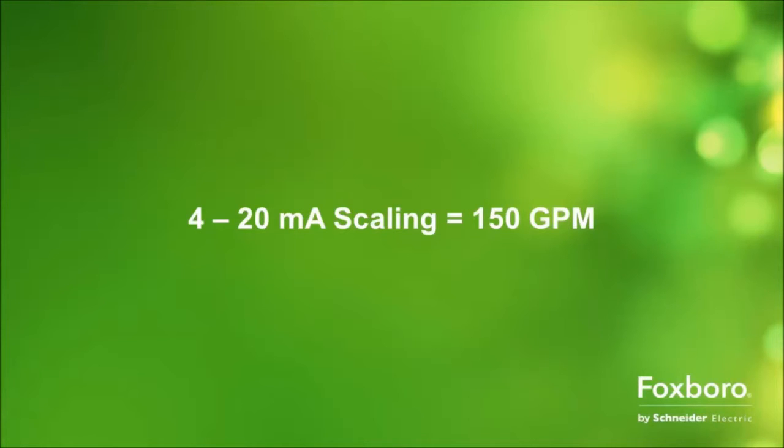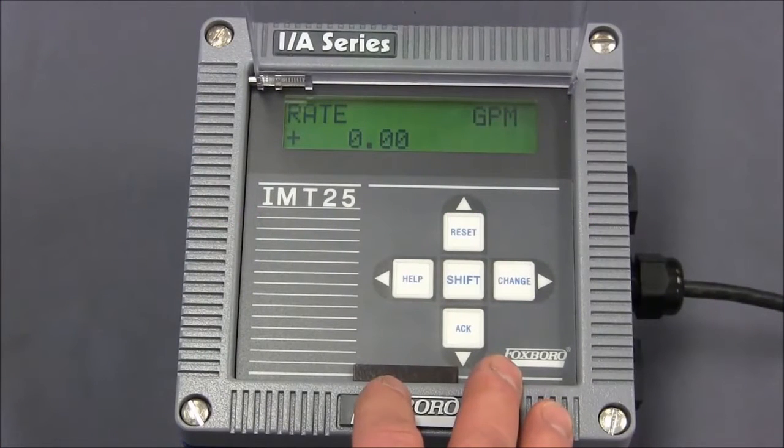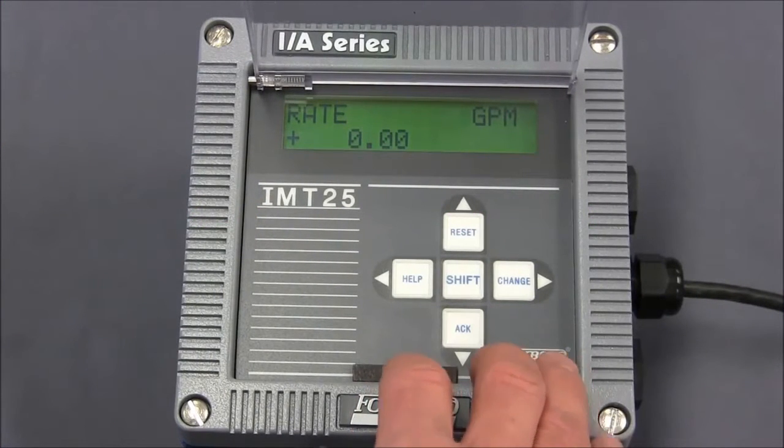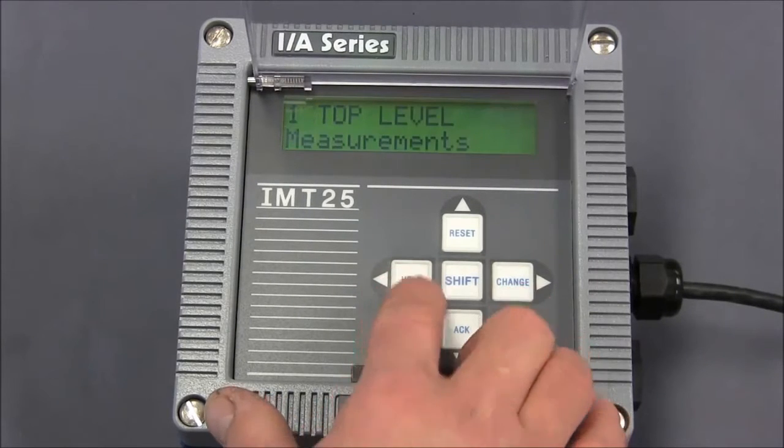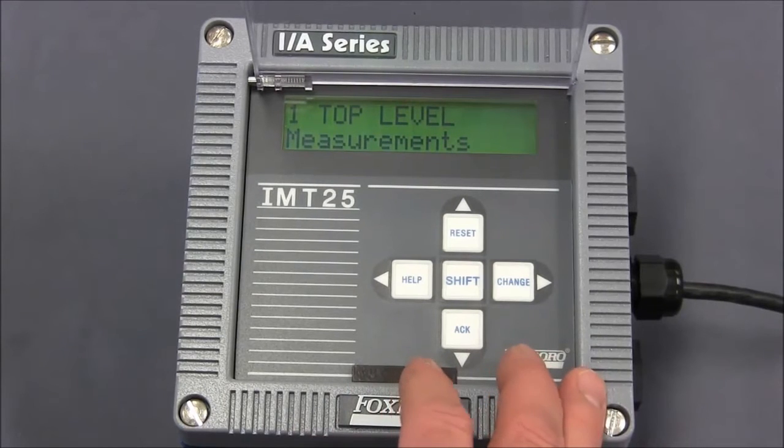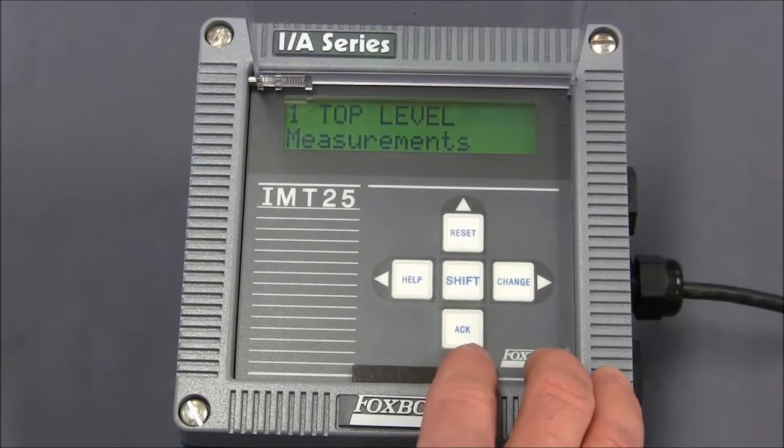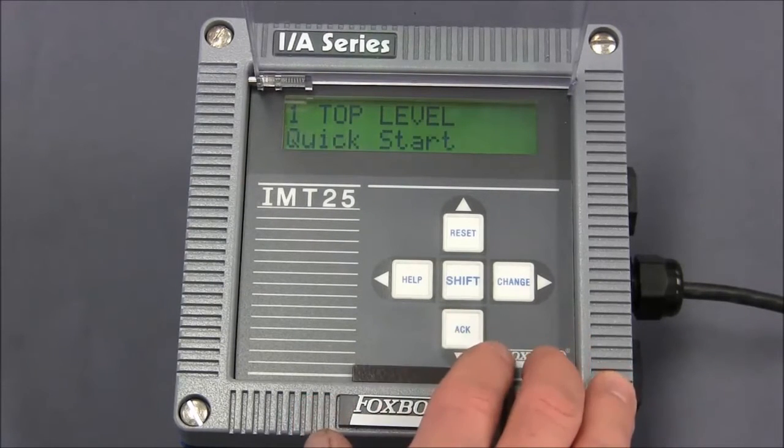Now let's configure the IMT25. From the measurement screen, we'll press the left arrow one time and the screen says top level measurements. We'll now press the down arrow or acknowledge key three times until it says top level quick start.